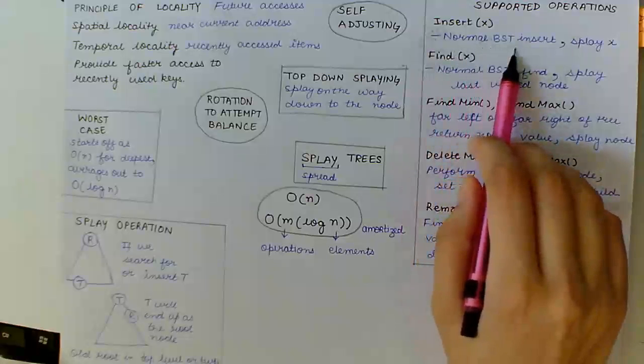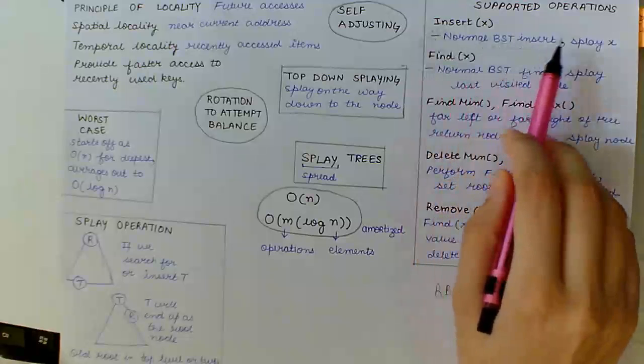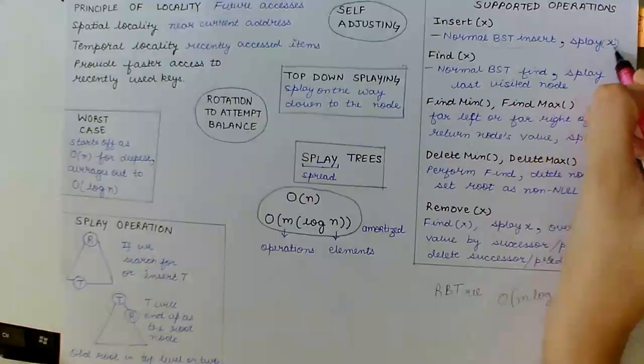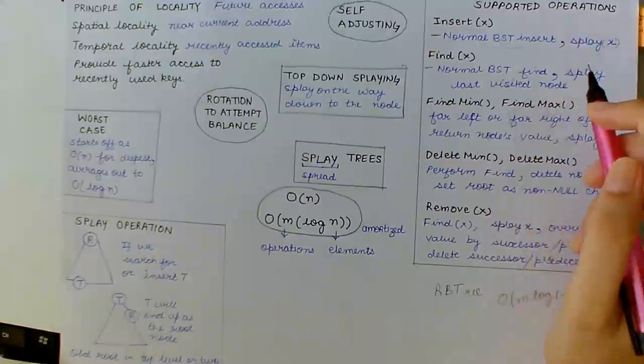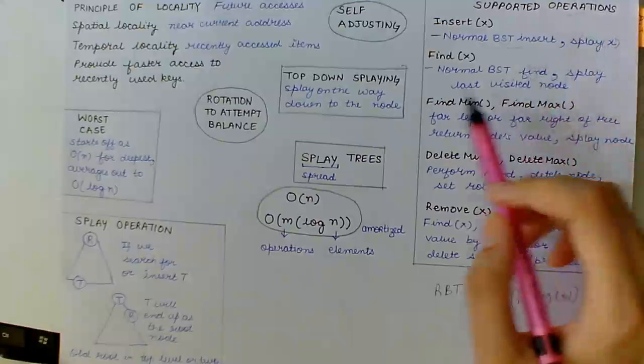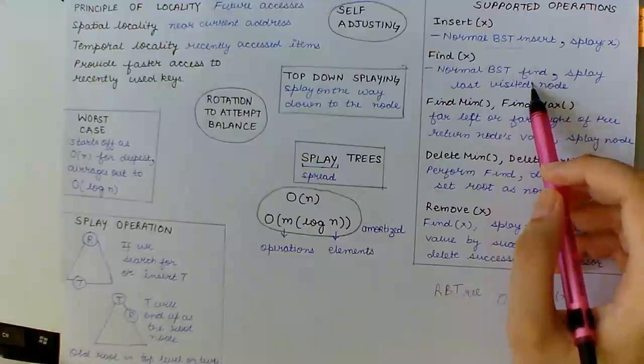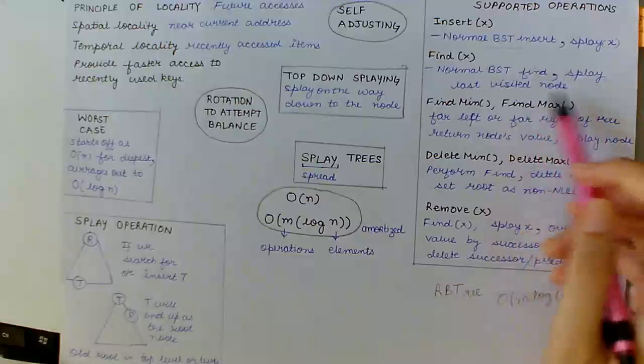Now, the operations supported by splay trees are insert. Insert happens normally as in BST, that is binary search tree insert, and then we splay X. For the X node which is added, we splay it.